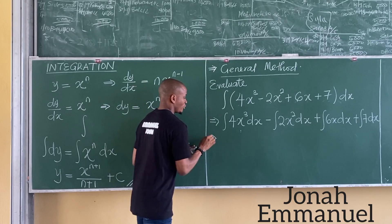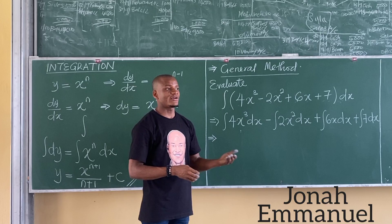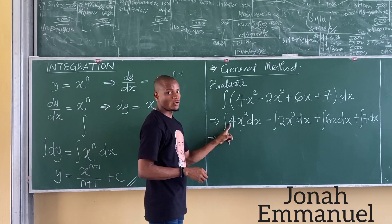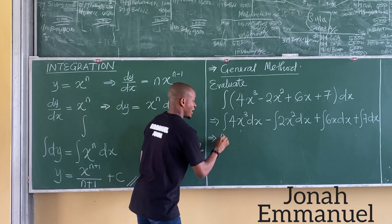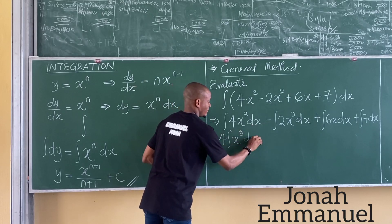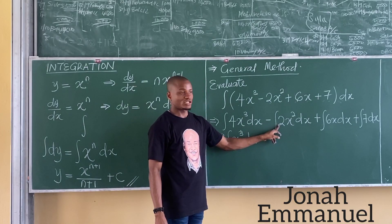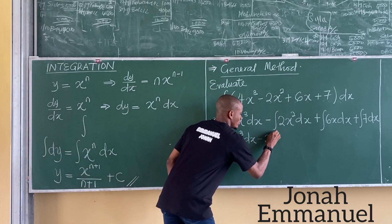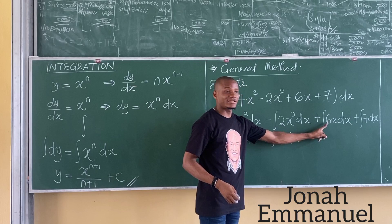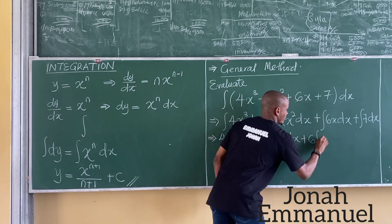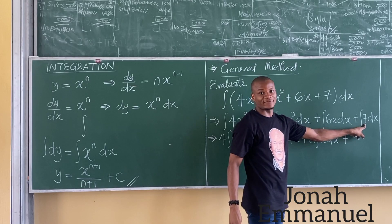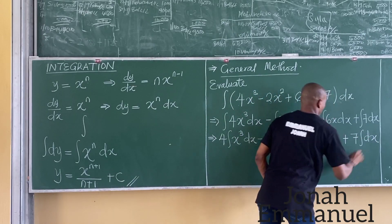The next step is, for each of the integrals, take the constant term outside the integral sign. The constant here is 4, so take 4 outside: 4 integral x cubed dx. Minus 2 integral x squared dx. Plus 6 integral x dx. Plus 7 integral dx.